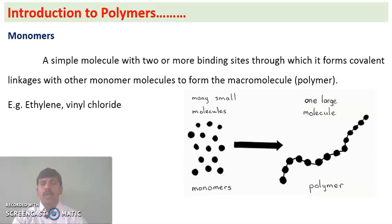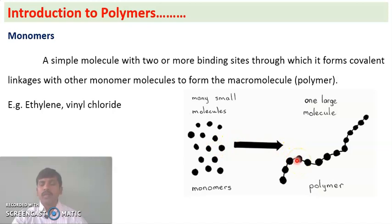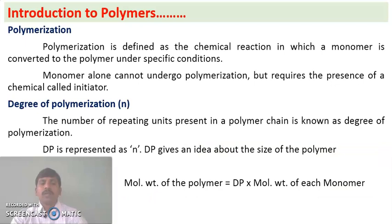Vinyl chloride is a monomer giving rise to polyvinyl chloride. After the polymerization chemical reaction, a number of small molecules — monomers — give rise to a single huge high molecular weight compound that is called a polymer.